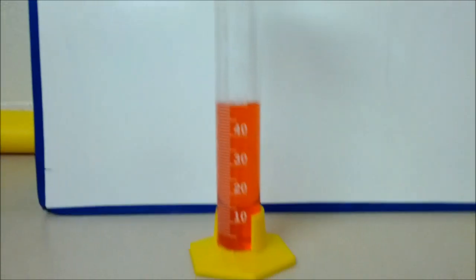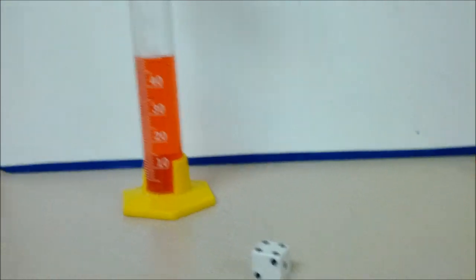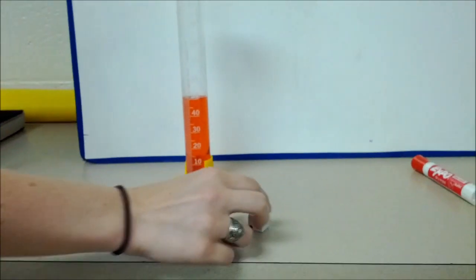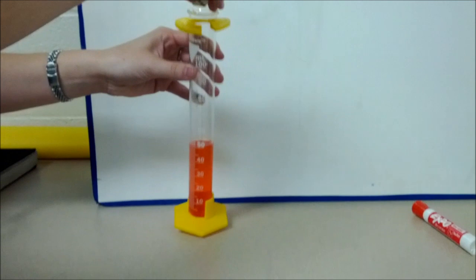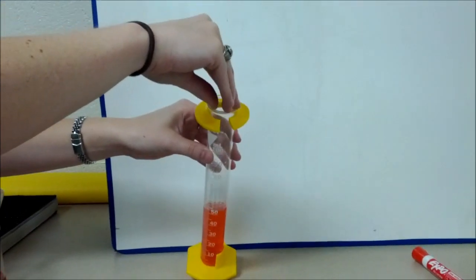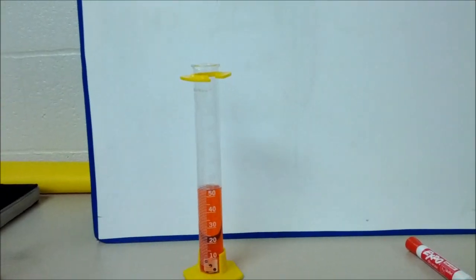All right, so we started out with 50 milliliters in here. Okay, now we're going to take our number cube and drop it in. Tilt it and slide it so we don't just drop it and make a big splash.